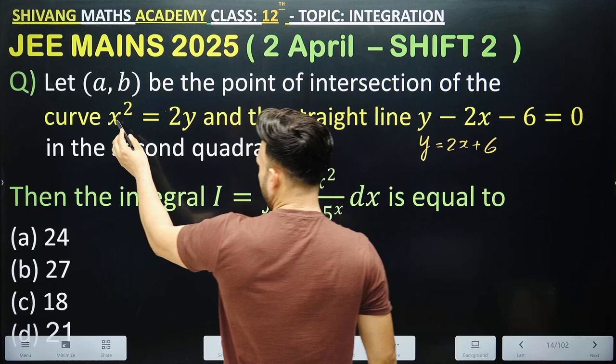From the line equation, y = 2x + 6. Substituting this into x² = 2y gives x² = 2(2x + 6). Simplifying, we get x² - 4x - 12 = 0. Factorizing this gives us the values of x.